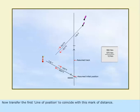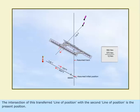Now, transfer the first line of position to coincide with this mark of distance. The intersection of this transferred line of position with the second line of position is the present position.